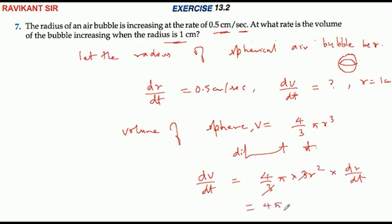Substituting the values: r = 1, dr/dt = 0.5. So dV/dt = 4π × 1² × 0.5 = 2π centimeters cubed per second. That's the answer.